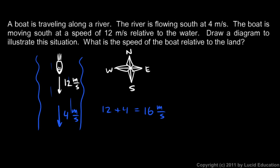If you're standing on the land watching the boat go by, relative to you, you see it going past at 16 meters per second. If the boat turned off its engine and just drifted with the current, it would drift past at 4 meters per second. But because it's moving at 12 meters per second relative to the water, it has that extra 12 meters per second in addition to the 4 meters per second from the current, so we add those two together to get 16 meters per second.